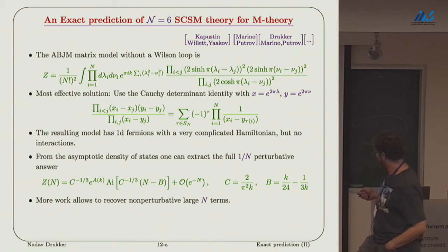You plug this in, and what you get is a model of one-dimensional free fermions. There are no interactions between them, but there is a very complicated Hamiltonian. If you just study the asymptotic density of states of this Hamiltonian, you can reproduce the full 1 over N perturbative answer as this Airy function. This Airy function, of course, at large N, at large argument, will scale like N to the 3 halves, which is the famous behavior of M2 branes.